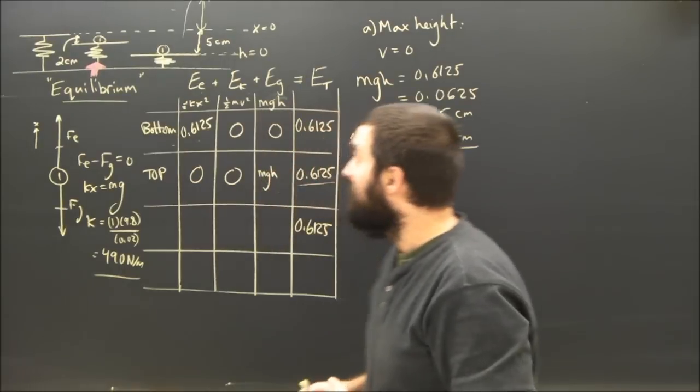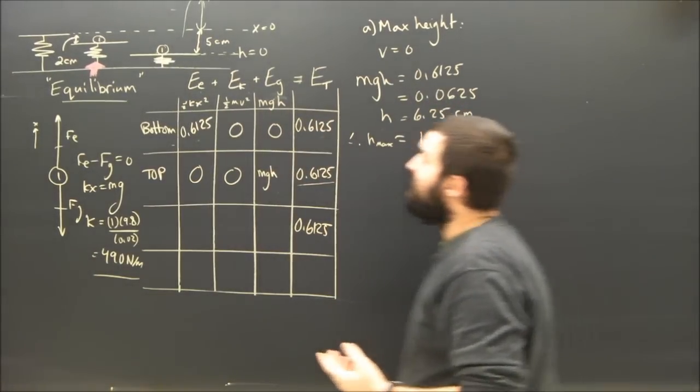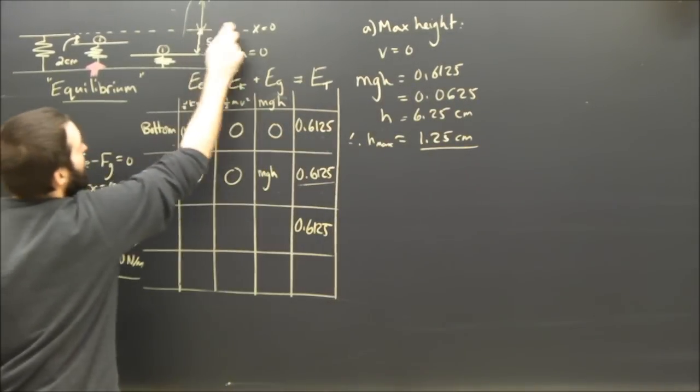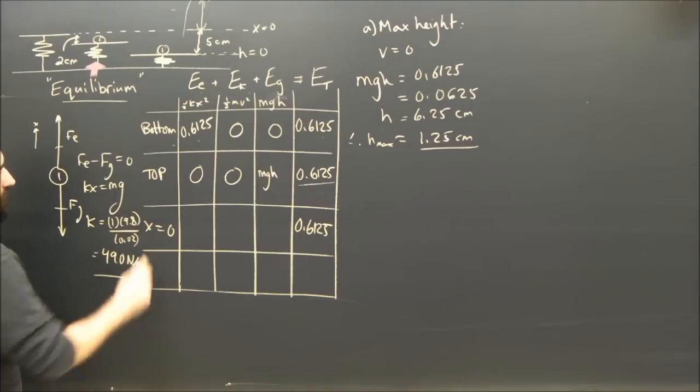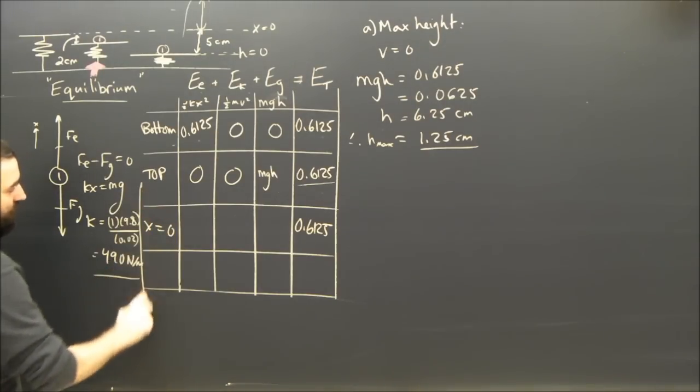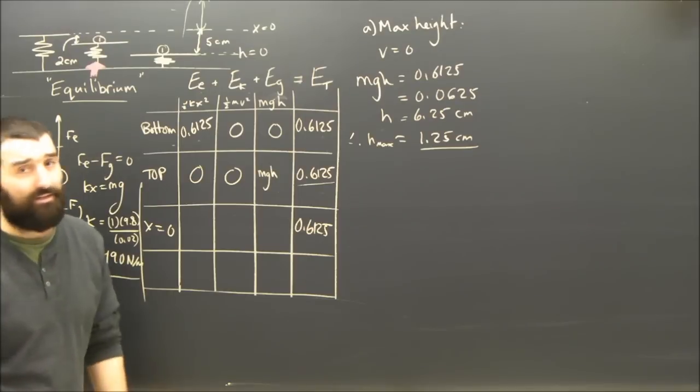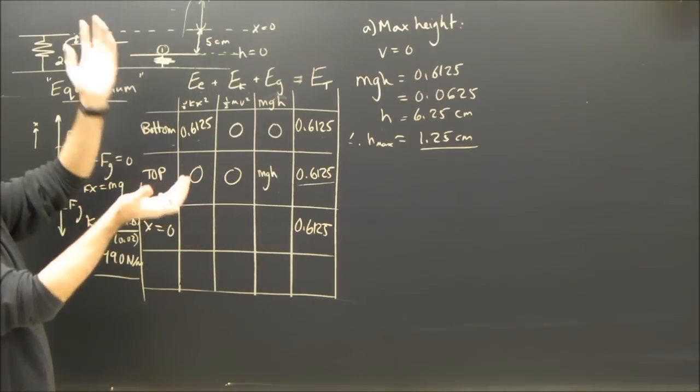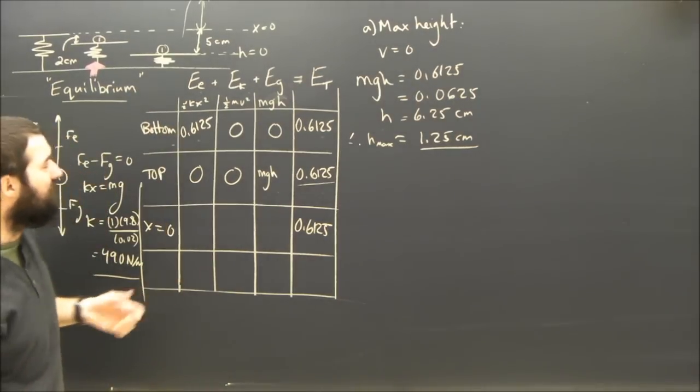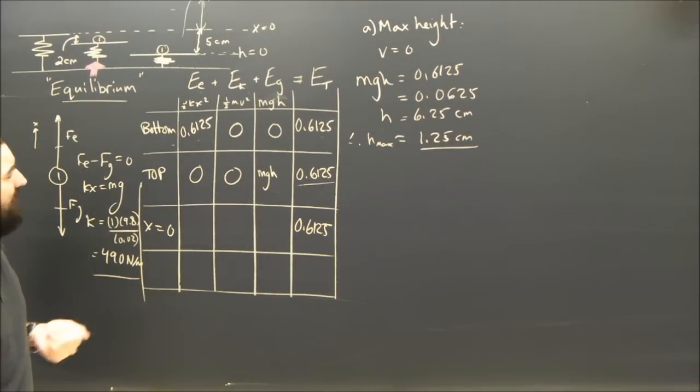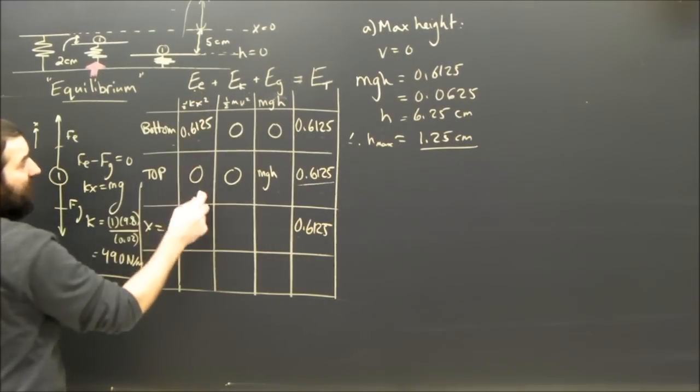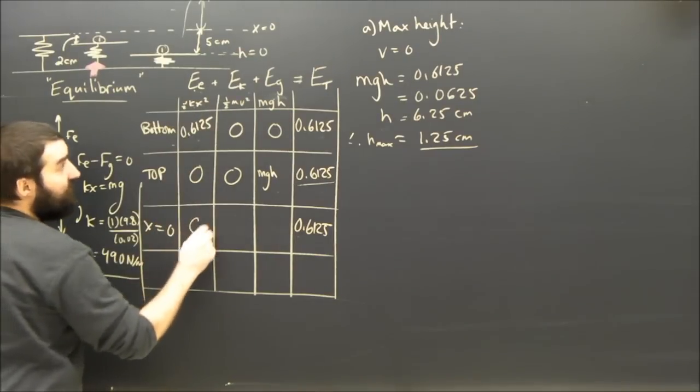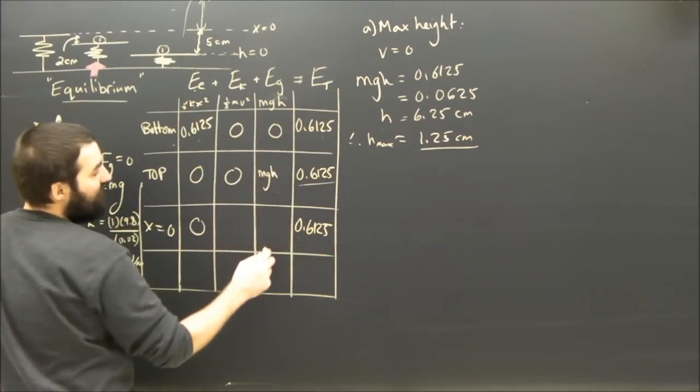So we have to try and think with our brains, where is this going to happen? The most common answer is to say when it leaves the spring, i.e., when X equals zero. That's the most common answer. As it leaves the spring, it's going to have the most speed. Once it leaves the spring, it's going to start slowing down due to gravity. So let's see what the kinetic energy is there. We know the total energy there.